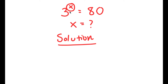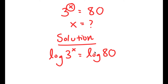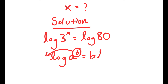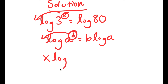What I'm first going to do is take the log on both sides, so I get log of 3 to the power of x is equal to log of 80. If I have something in the form log of a to the power of b, I can move this exponent b to the front — so this turns into b times log a. For log 3 to the power of x, I can move x to the front and I get x times log 3, and this is equal to log of 80.